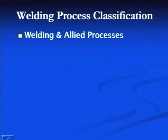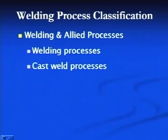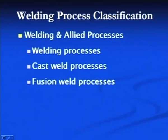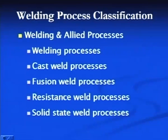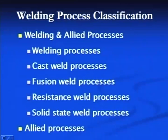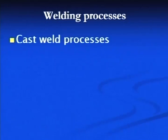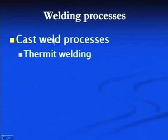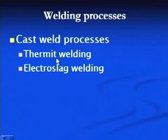The welding processes include: cast weld processes, in which molten metal generated by flash welding or an external heat source is poured between the faying surfaces to produce the joint; fusion welding processes; resistance welding processes; and solid state welding processes in which metal remains in the solid state and no significant heating takes place. Cast weld processes include thermite welding and electro slag welding.